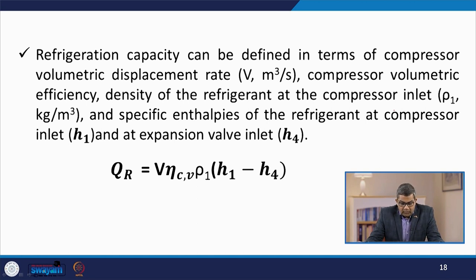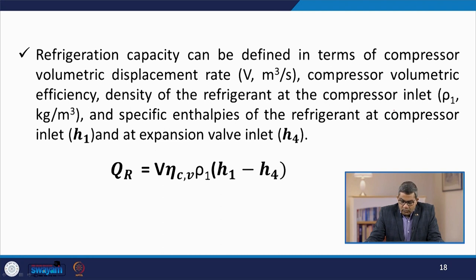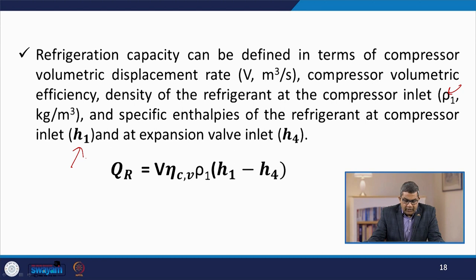Refrigeration capacity can be defined in terms of: compressor volume displacement rate V (m³/s), compressor volumetric efficiency η_cv, density of refrigerant at compressor inlet ρ₁ (kg/m³), and specific enthalpies of refrigerant at compressor inlet h₁ and at expansion device inlet h₄. The formula is: Q_R = V × η_cv × ρ₁ × (h₁ − h₄).